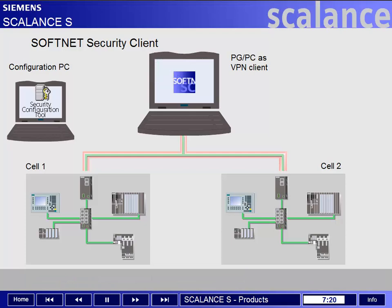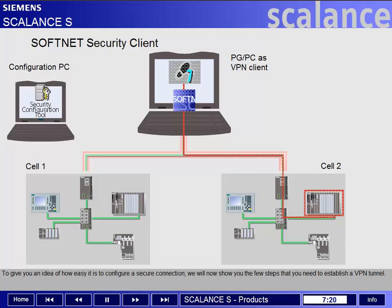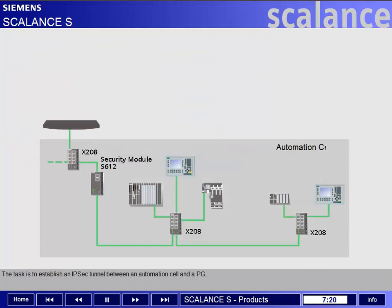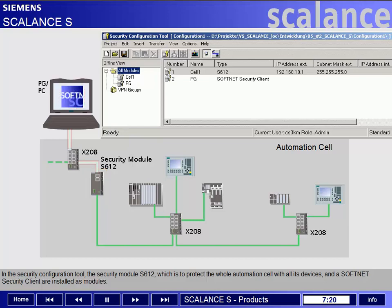The configuration settings and the required certificates and keys are transmitted from a configuration PC to the workstation from which the secure connection to the security modules will be established. For an application such as Step 7, the access to the protected device via TCP/IP is fully transparent. To establish a VPN tunnel, the task is to set up an IPsec tunnel between an automation cell and a PG. In the Security Configuration Tool, the security module S612 — which is to protect the whole automation cell with all its devices — and a SoftNet Security Client are installed as modules. The next step is to create a group and add the desired modules to the group by drag and drop.